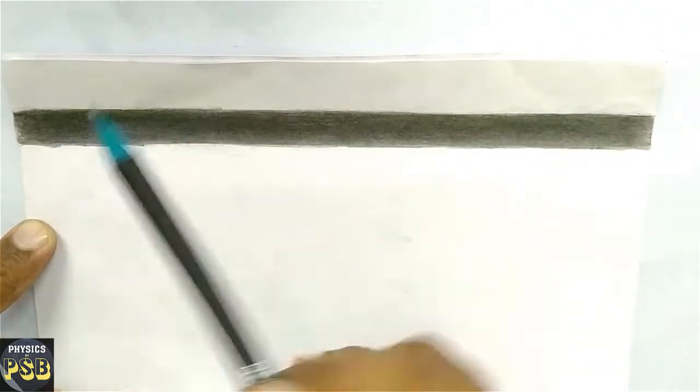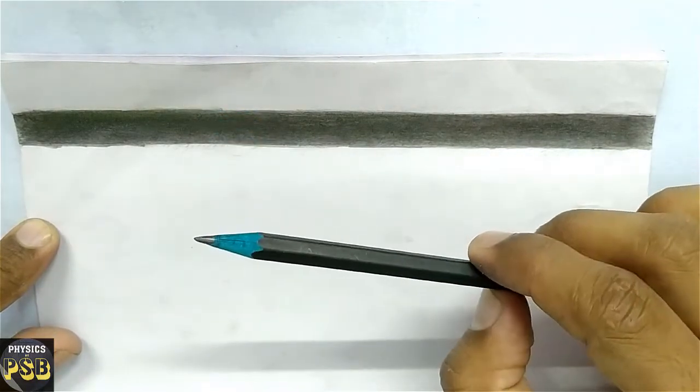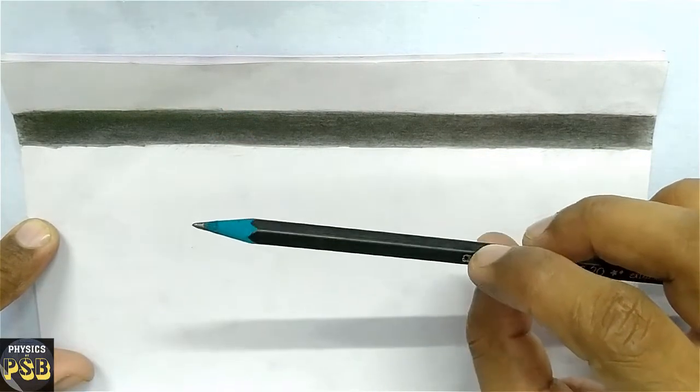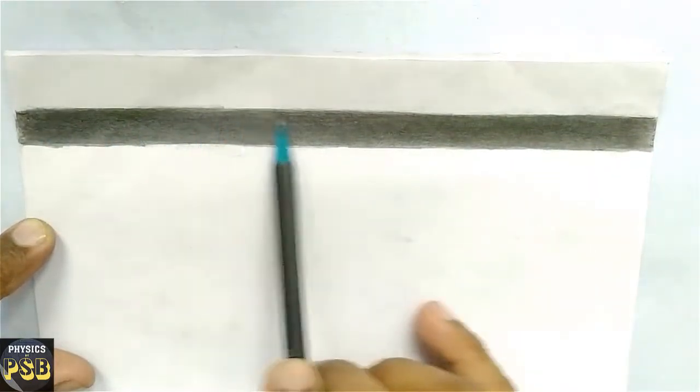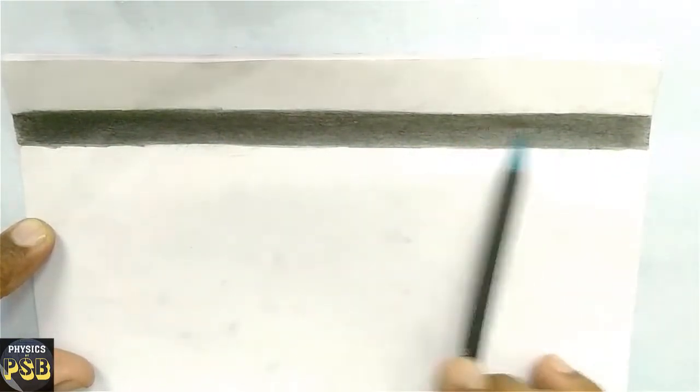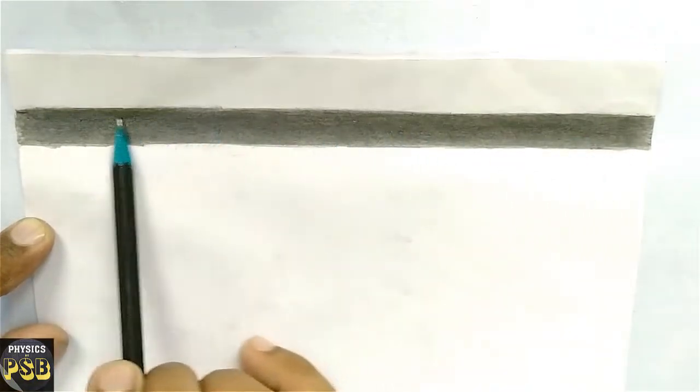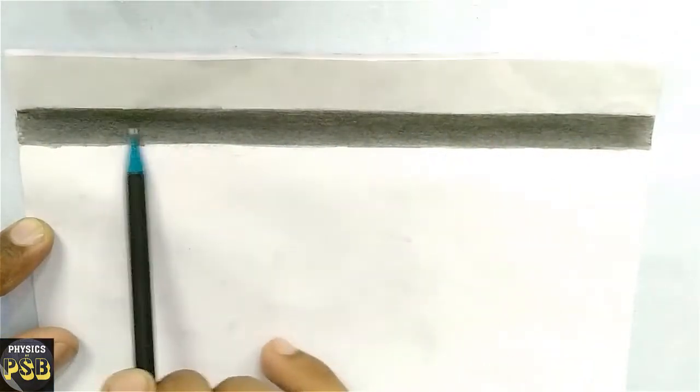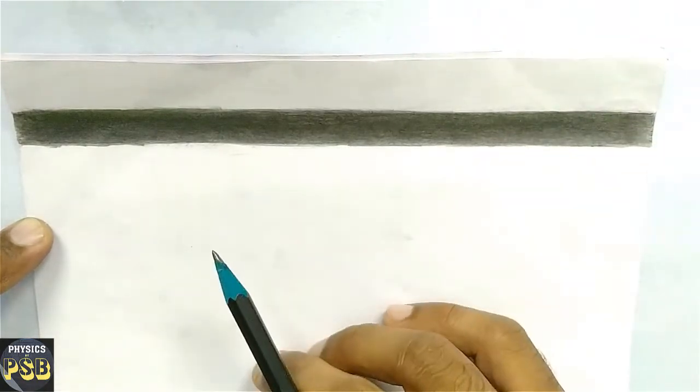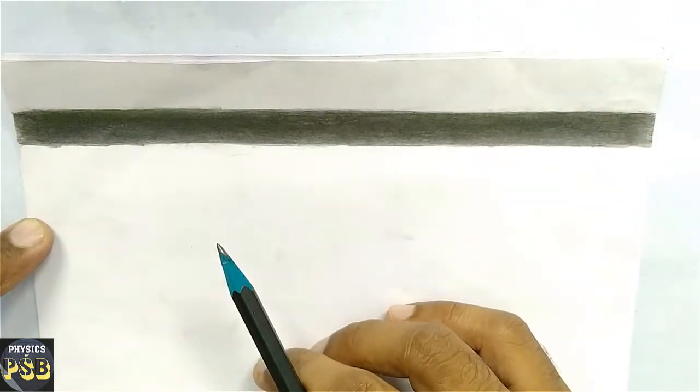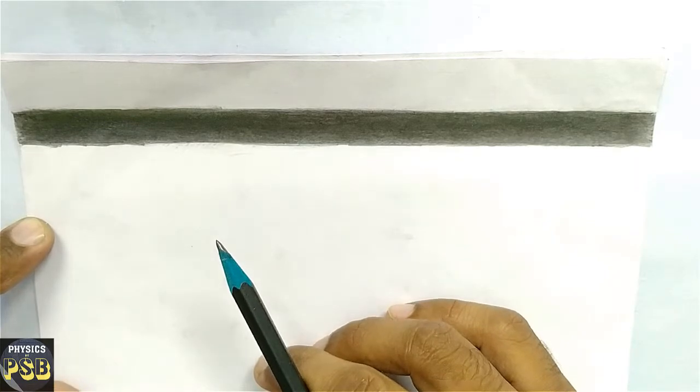We know the tip of the pencil is made of graphite, which is an allotrope of carbon. When I scribble the paper using pencil, it forms a thin coating of carbon over it. So it is not exactly similar to the coating given on the ceramic core of a resistor.